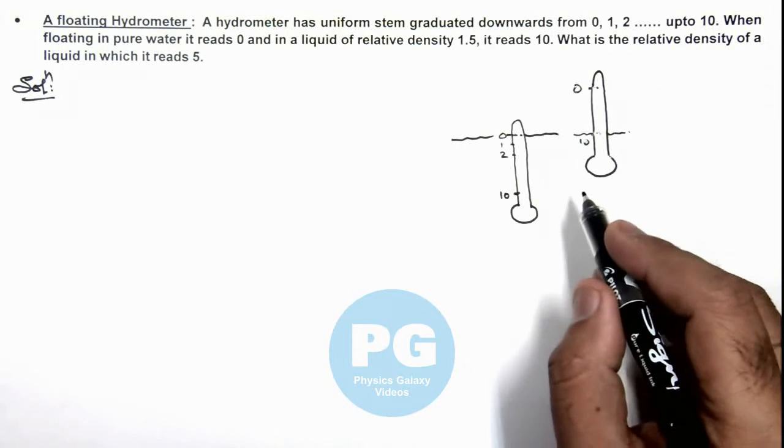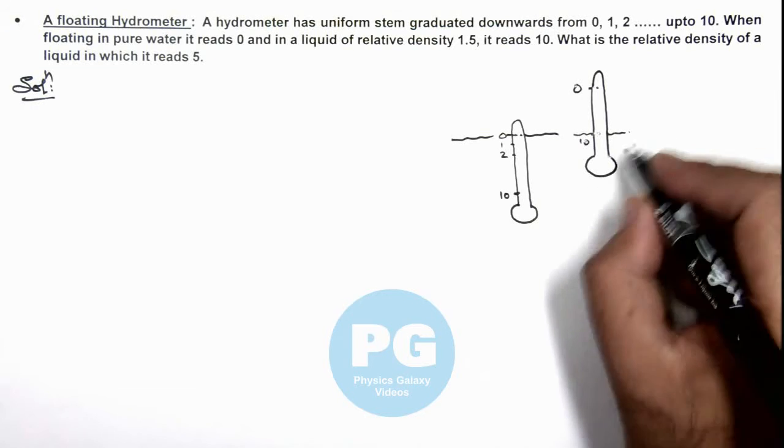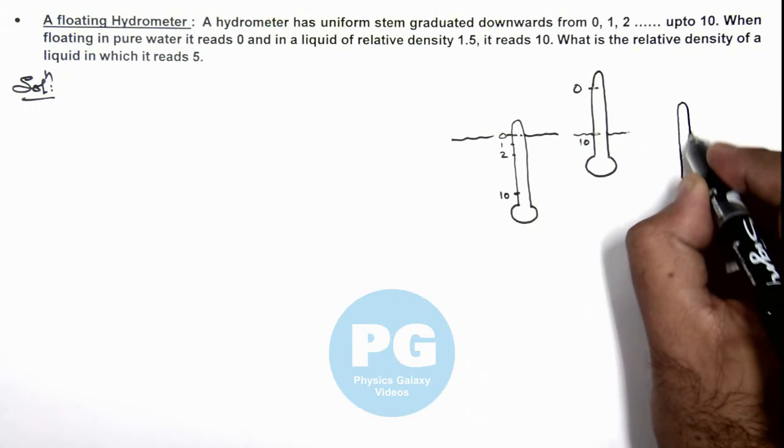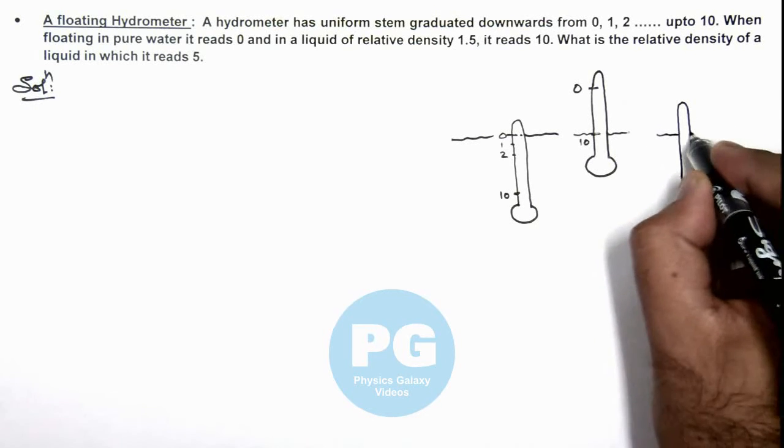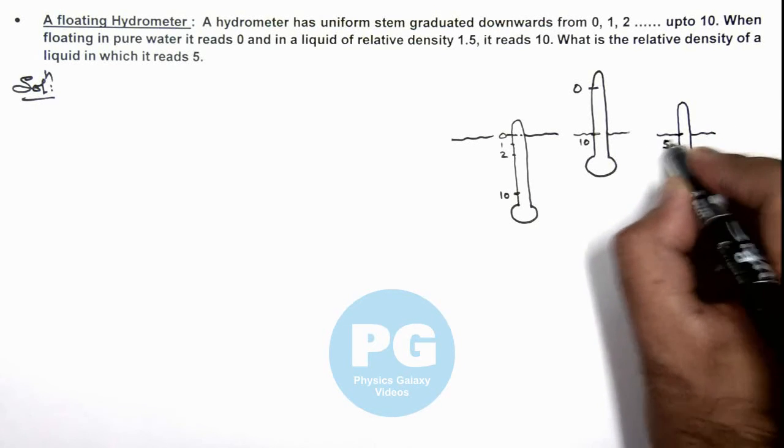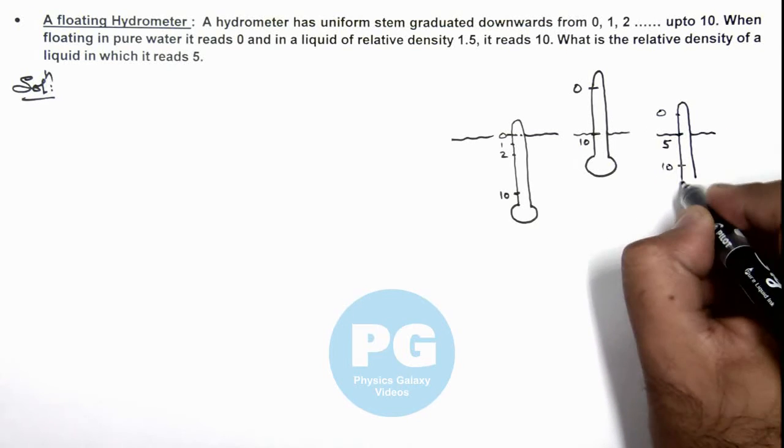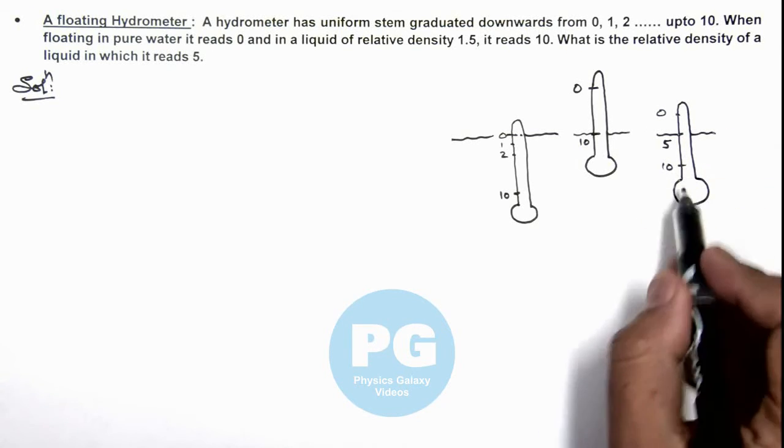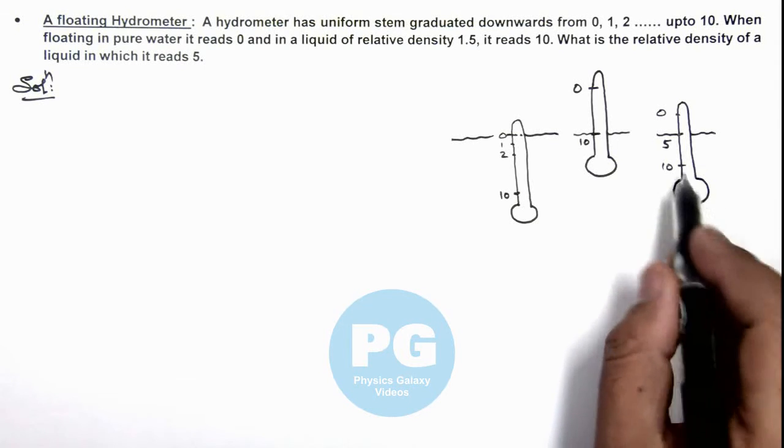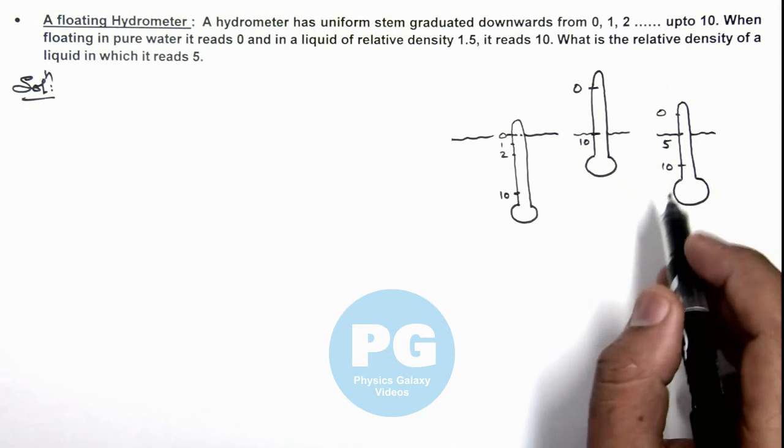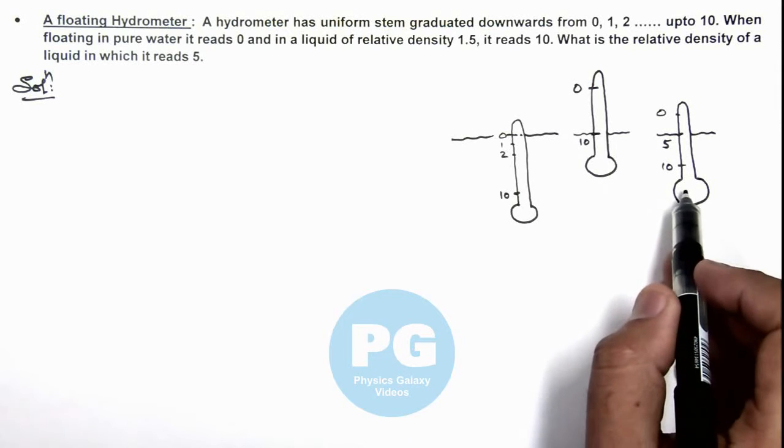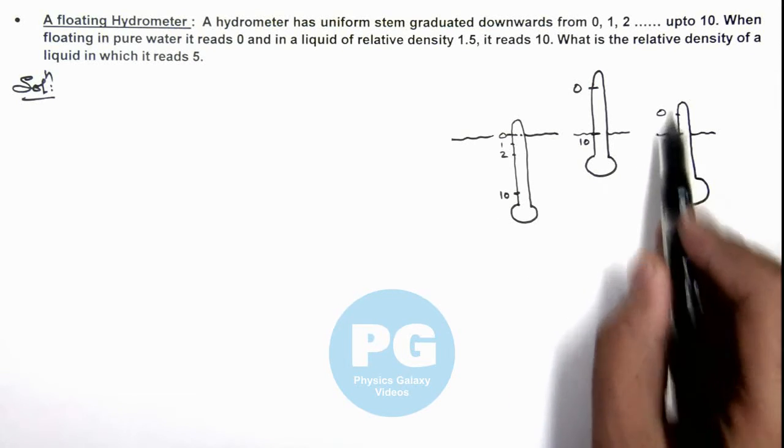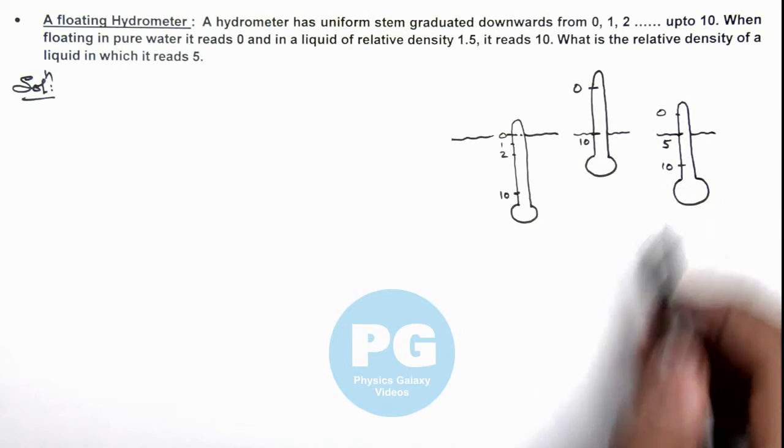And certainly if the relative density is between the two, it'll be floating with the stem midway at the water level where it is reading the mark 5. Here it is zero and here it is 10, and this is the bulb of hydrometer. This bulb can be regarded as any volume which is used to calibrate this hydrometer, that means in whichever liquid we place this hydrometer, it'll be floating in such a way that the calibrated marks on the hydrometer stem gives us the relative density of the liquid.